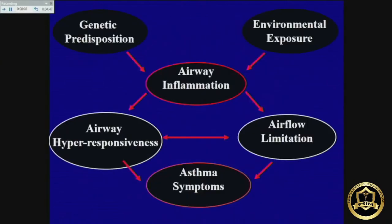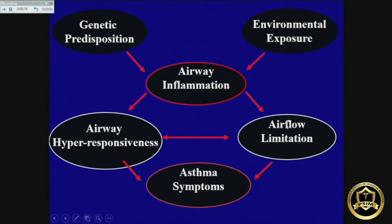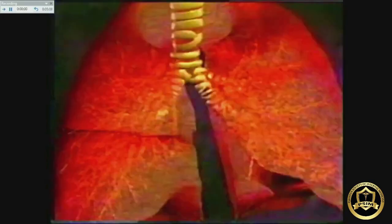Then there is rupture of the mast cells; phospholipase present in them acts on the lipid membrane, producing more mediators that cause chemotaxis of various cells. They all come into the mucosa and inflammation takes place in the airways. In a nutshell, anyone who is genetically predisposed, along with environmental factors, will develop airway inflammation, which leads to hyper-responsiveness, which leads to variable airway obstruction, responsible for causing the symptoms of asthma.